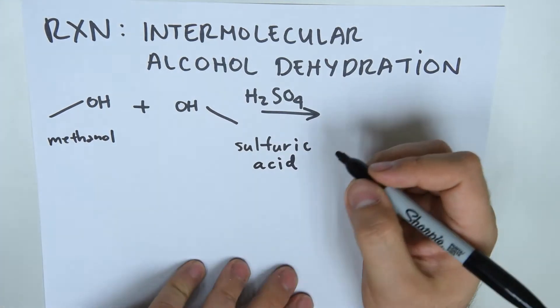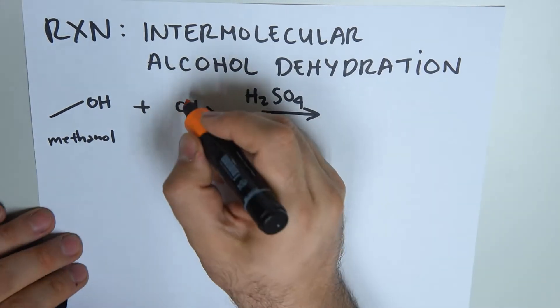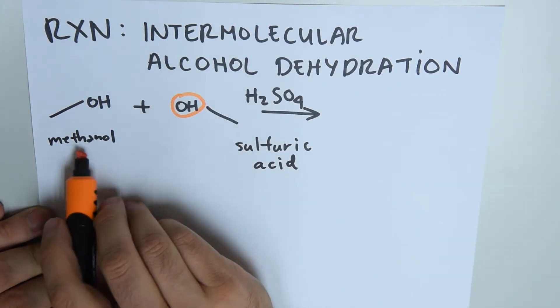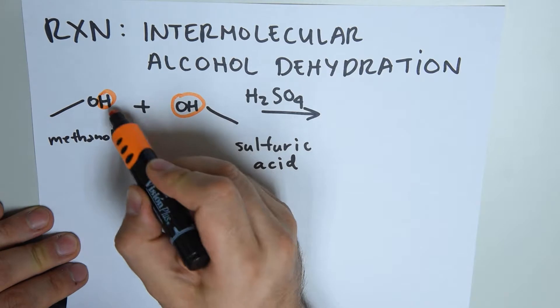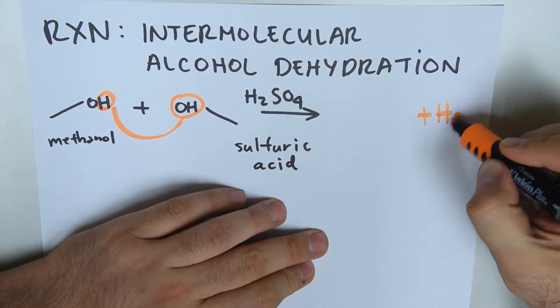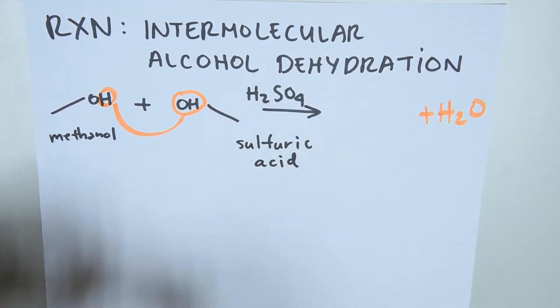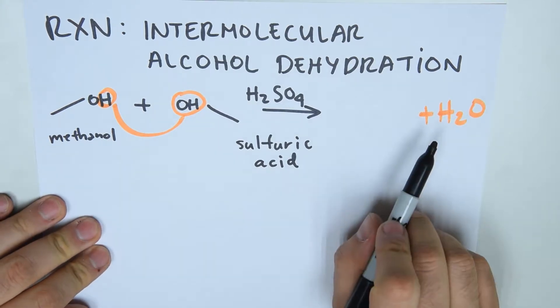What's going to happen? The OH from one of the alcohols and one of the H's are going to join together, giving us water as a side product. That's why it's called intermolecular alcohol dehydration. Between the two molecules of alcohol, we dehydrate, producing one molecule of water.